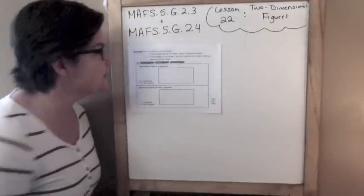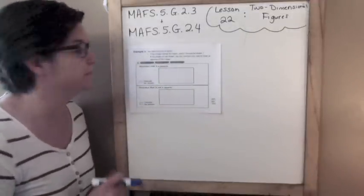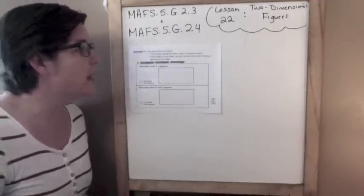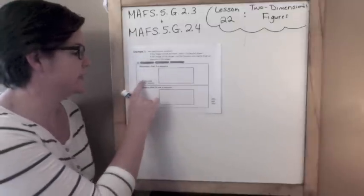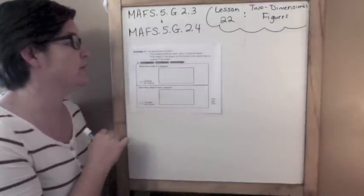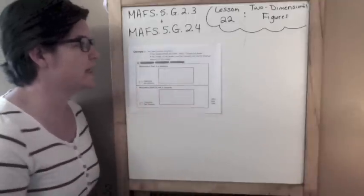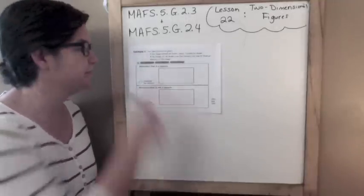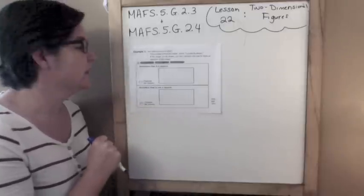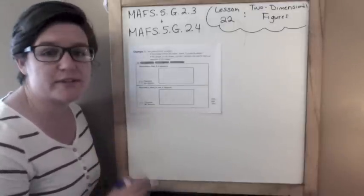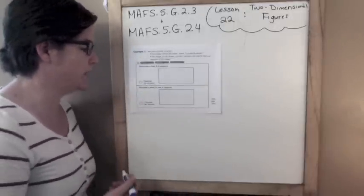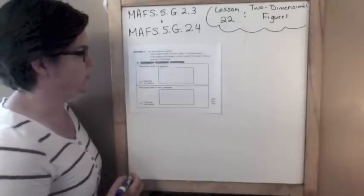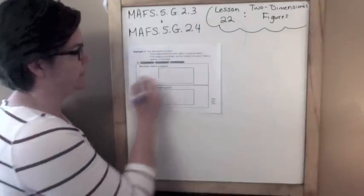Example 1 says two descriptions are given. If the shape cannot be drawn, select cannot be drawn. If the shape can be drawn, use the connect line tool to draw an example of each shape. The first one says to draw a rhombus that is a square. So a rhombus that is a square, can I draw that?